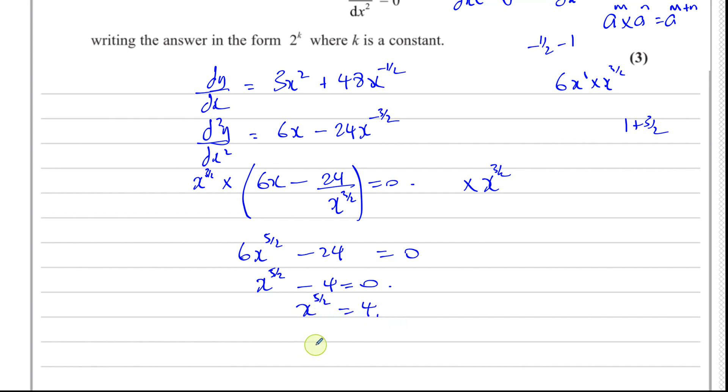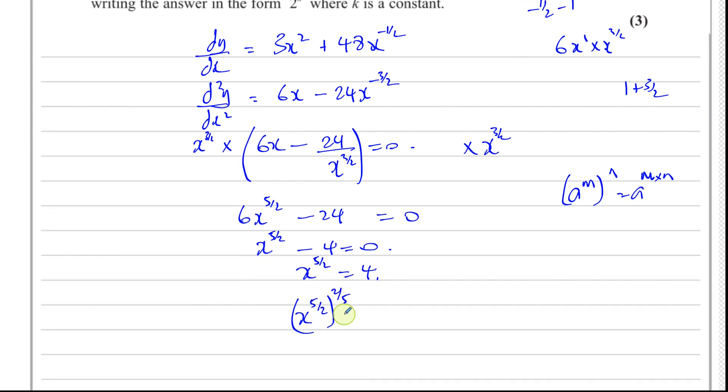It's raised to the power of five over two. I want it to be raised to the power of one. From our laws of indices, when you have something raised to a power to another power, you multiply the powers. So if I raise this side of the equation to the power of two fifths, that will make it x to the power of one, which is what I want. But if I raise one side to the power of two fifths, I must raise the other side also to the power of two fifths. So x equals four to the power of two fifths.